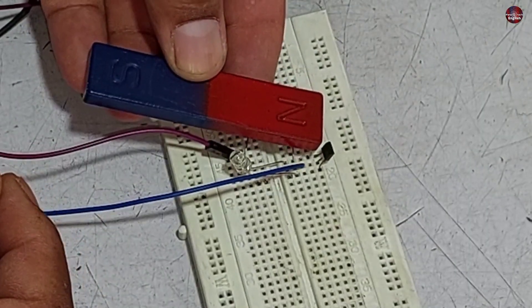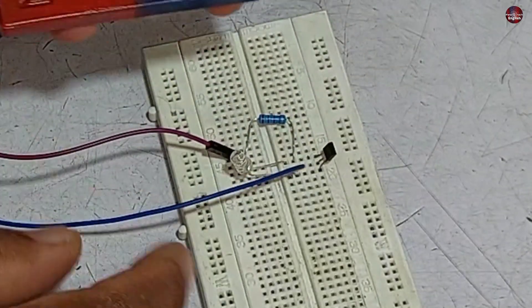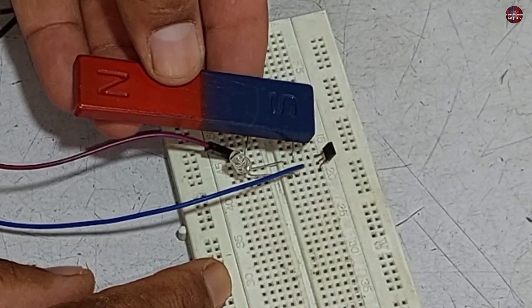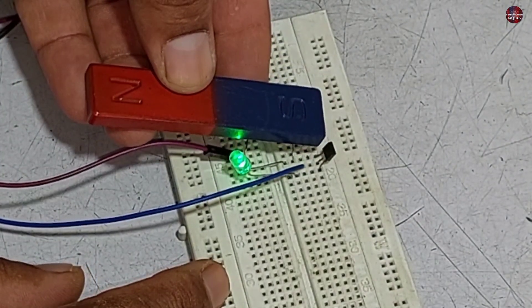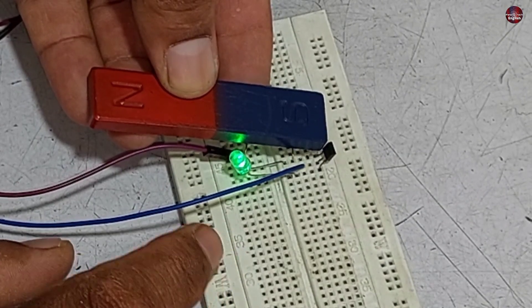As I have brought the north of the magnet closer to the front side of the hall sensor, it is not working. But it worked when I brought the south closer to the front side of the hall sensor. This means the effect of the magnet is different on the front and back sides of the hall sensors.